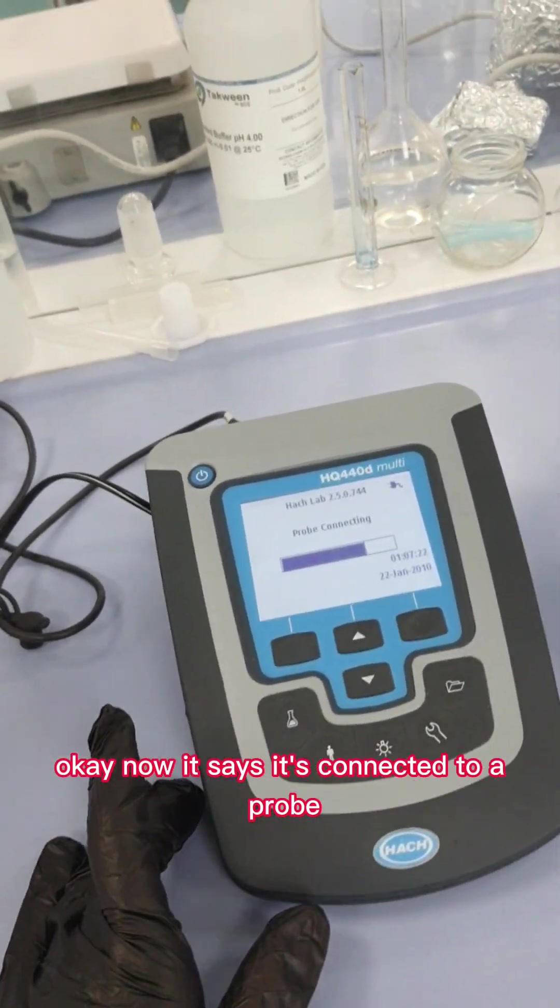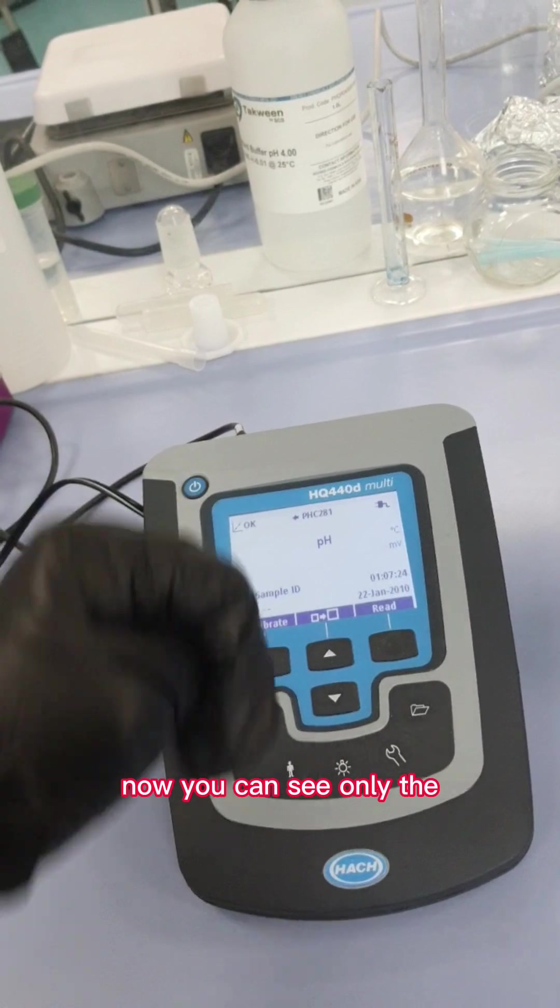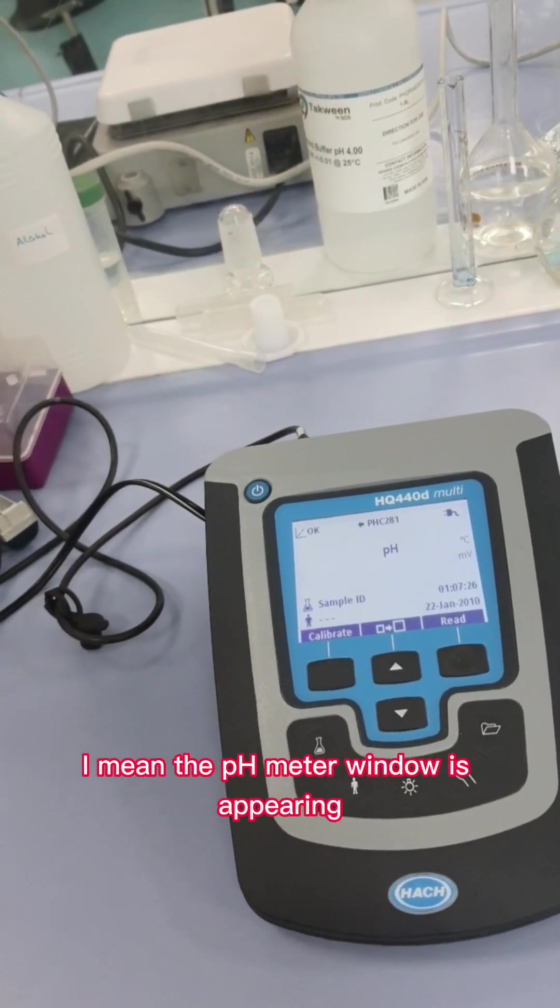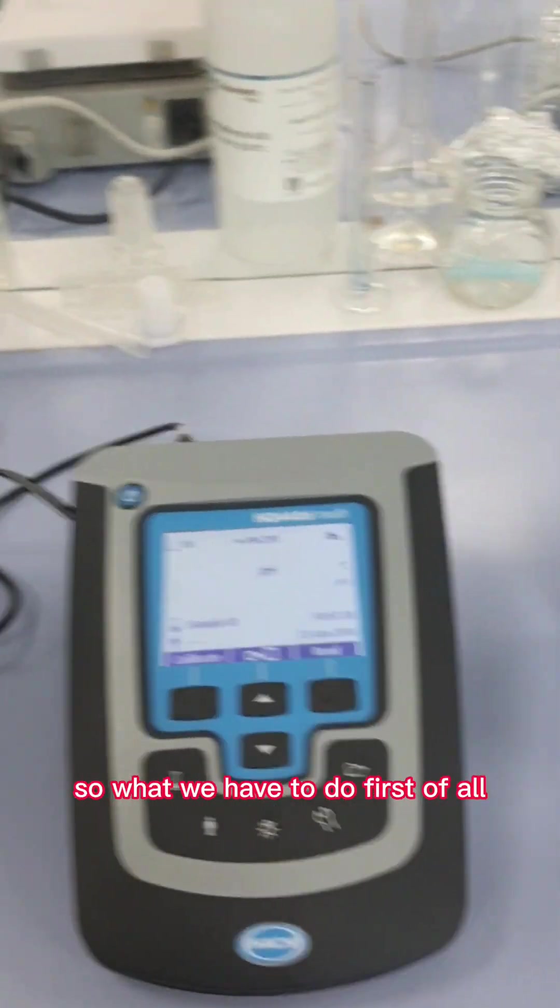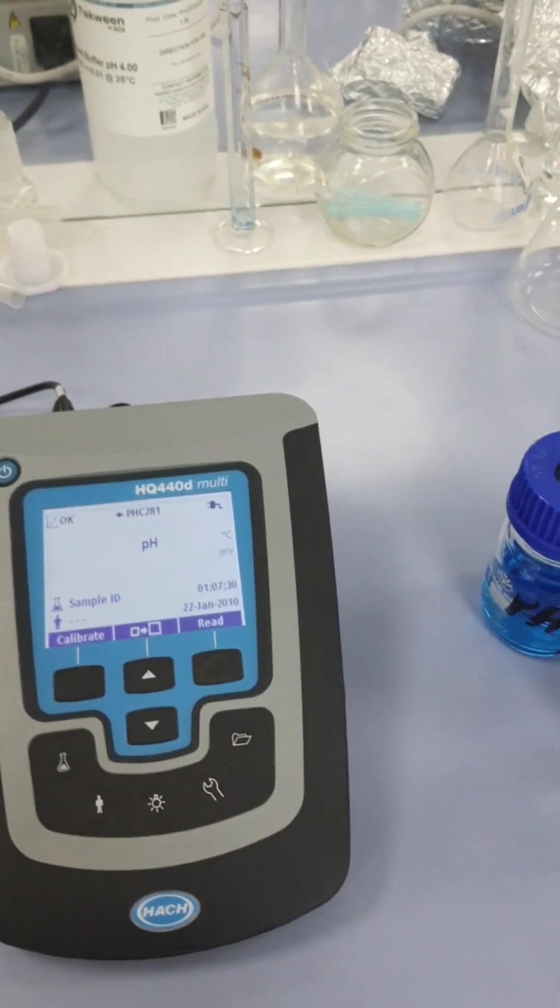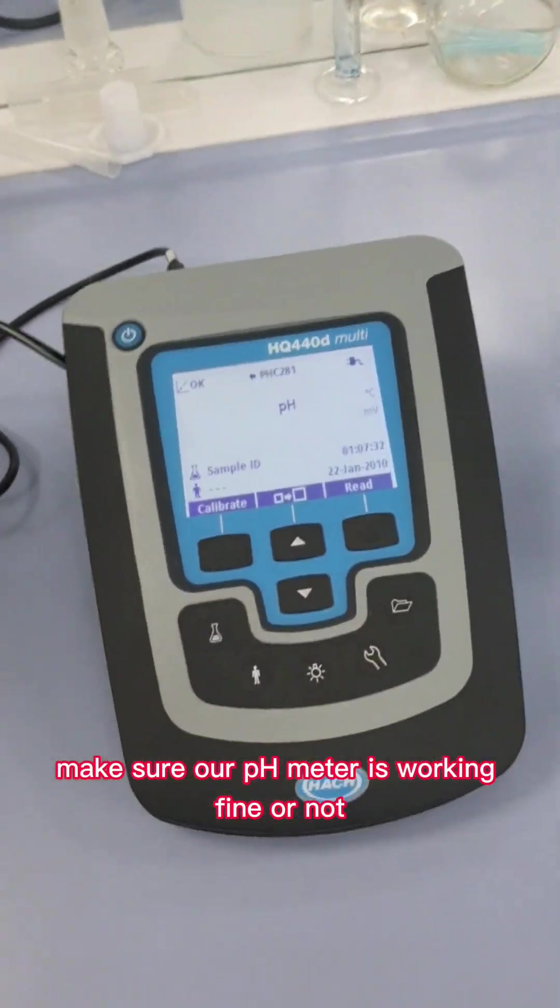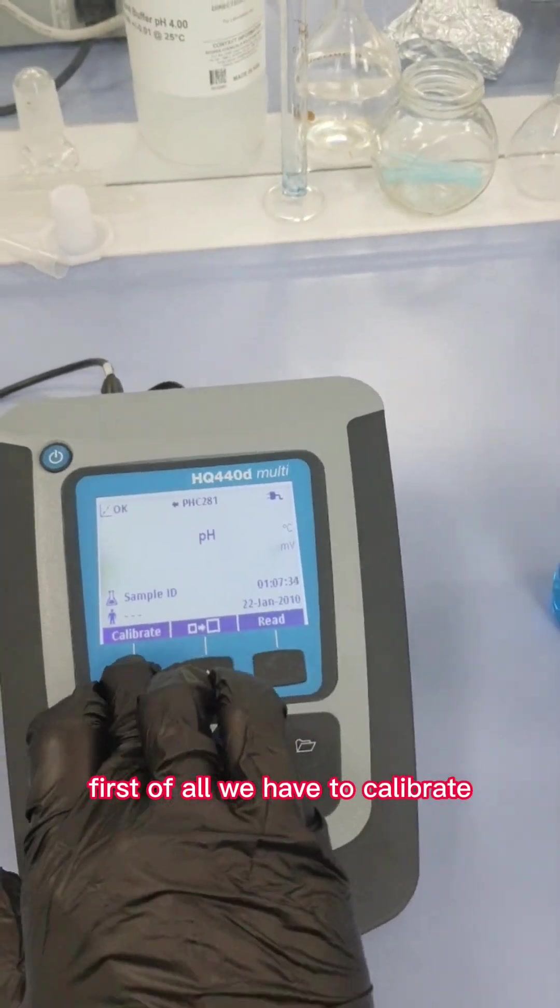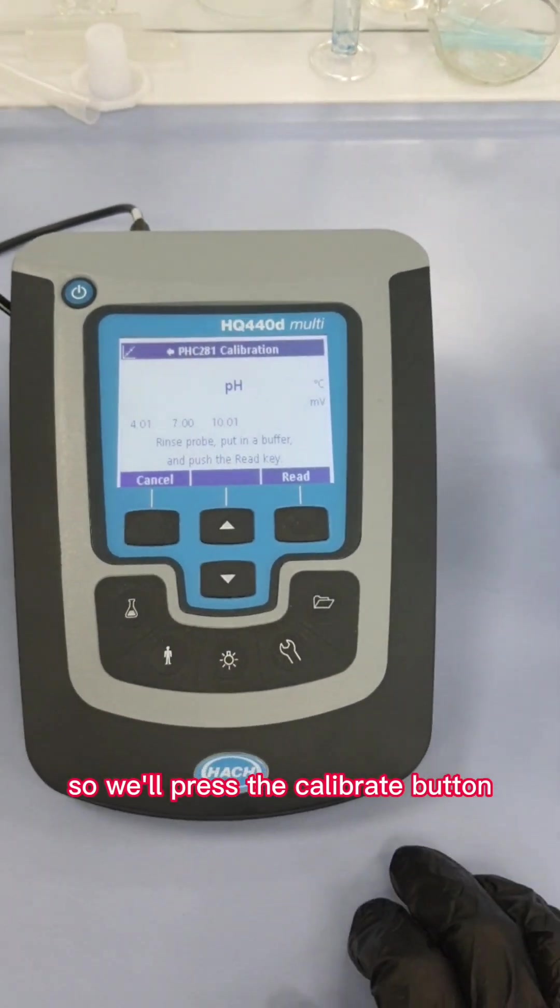Now it says it's connected to a probe. You can see the pH meter window is appearing. What we have to do to make sure our pH meter is working fine - first of all we have to calibrate.